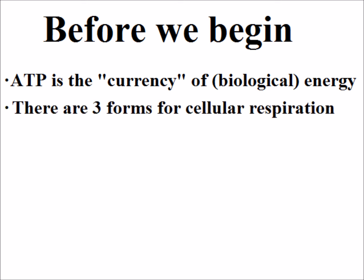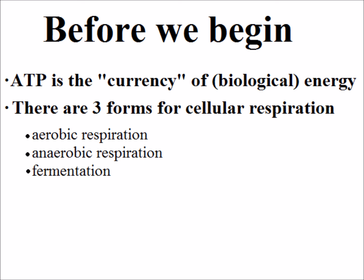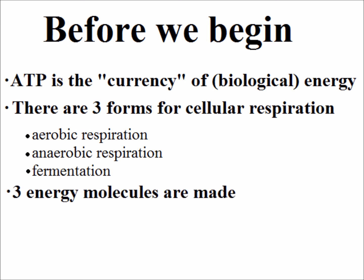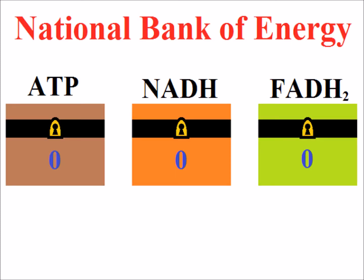There are three forms of cellular respiration: aerobic, which is the most common; anaerobic, which does not use oxygen; and fermentation, which is much shorter than the first two. Finally, three energy molecules are made during cellular respiration. We'll keep track of them at the National Bank of Energy. Every time molecules of energy are made, we'll put them in their respective box and announce the final balance at the end of the video.